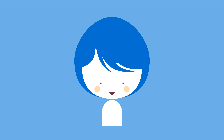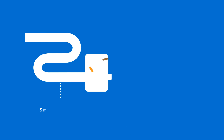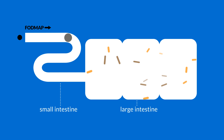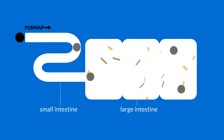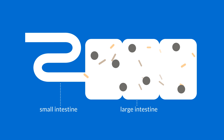Certain FODMAPs do not get fully broken down and absorbed in the gut, increasing the amount of water released and the amount of gas produced. In sensitive individuals this can lead to pain, bloating, wind and a change in bowel habit, often described as IBS, irritable bowel syndrome.